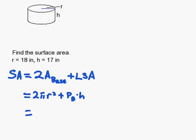So let's keep going. I have 2 times pi times 18 squared plus 2 pi r times height.